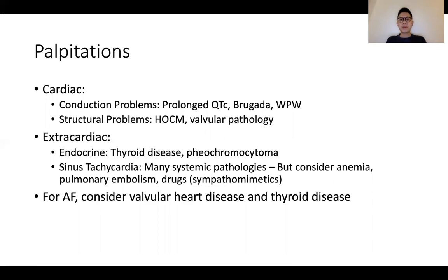The next approach is that to palpitations. I think of it slightly artificially as whether it's due to an underlying cardiac problem or whether it's extracardiac. For cardiac problems, I think of it in terms of whether it's a primary conduction problem — such as prolonged QT that can either be congenital or acquired from things like drugs or electrolyte disturbances — Brugada and WPW being other inherent conduction problems. Although these are not that common in the station 5 exam, potentially in station 2 a young patient comes in with palpitations or suggestion of underlying ventricular arrhythmia, and congenital conduction defects could be considered.